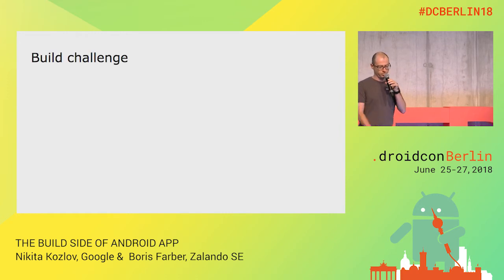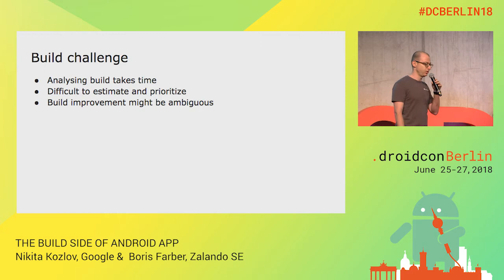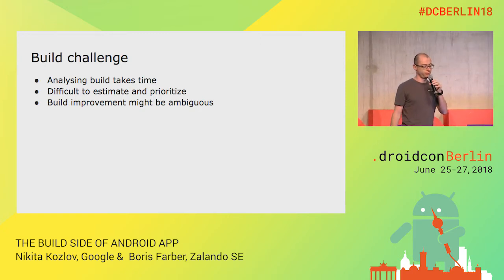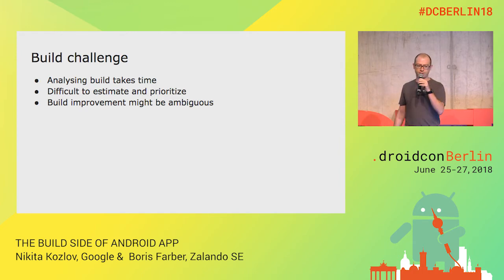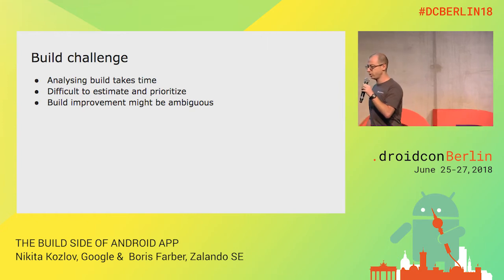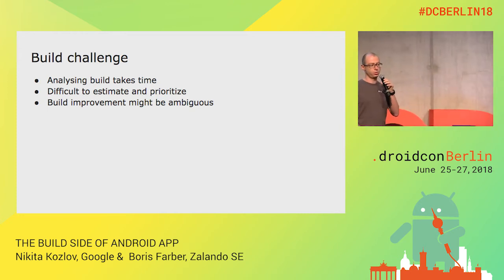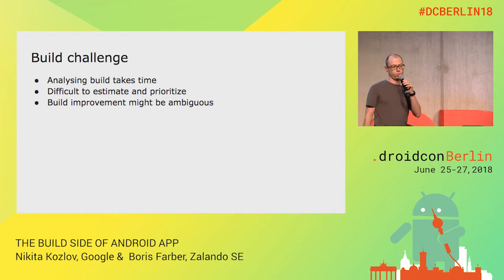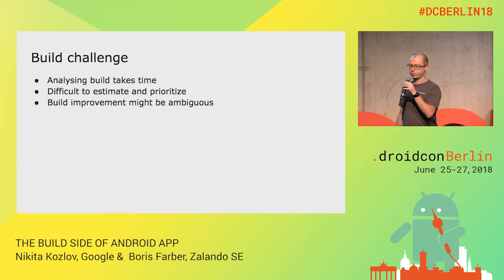This talk is to justify and explain why. The build process is not something easy, because analyzing builds takes time. It's difficult to estimate and prioritize build tasks. The build improvement might be ambiguous. Based on my experience, there is no silver bullet that you can apply and everything works great. Some stuff that was beneficial to one type of project was not beneficial to another. This is why, as an Android developer, you need to be cautious and mindful so you can focus on the right things.